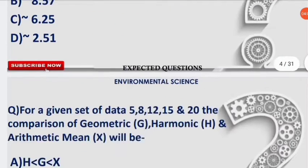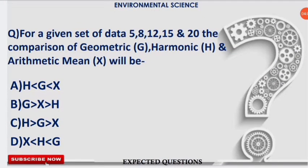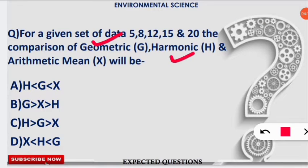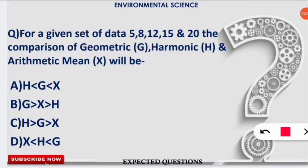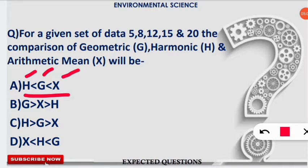The next question compares geometric mean, harmonic mean, and arithmetic mean for a given data set. You don't need to calculate all three if you know the universal concept: harmonic mean is always less than geometric mean, and geometric mean is always less than arithmetic mean. The sequence is HM < GM < AM. That's why I called harmonic mean the youngest of all means.